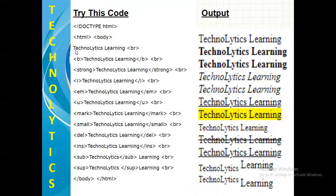Now, next I have written TechnoLytics Learning. It is a normal text. So, no effect is there. You can see at the right hand side simple TechnoLytics Learning text is there. Then we have used BR tag just to break that line and the next output will be displayed on the new line.